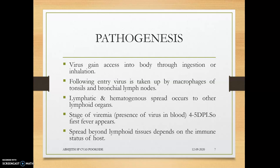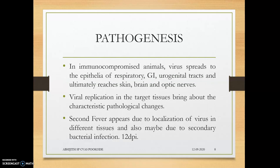Spread beyond lymphoid organs depends on the immune system of the host. If highly immune, lymph nodes will not be much affected. However, in immunocompromised animals, the virus spreads to the epithelia of the respiratory tract, GI tract, and urogenital tract, ultimately reaching the skin and brain. Virus replication in target tissues brings about characteristic pathological changes including macroscopic and microscopic lesions.